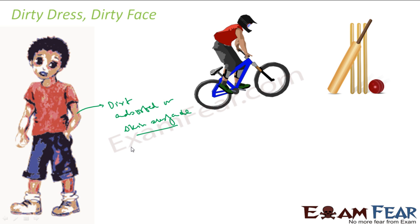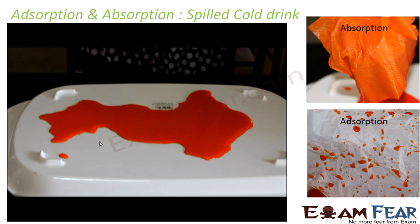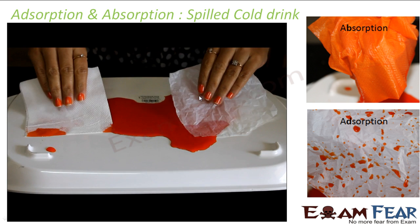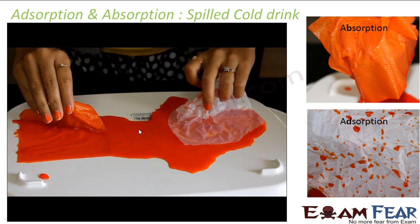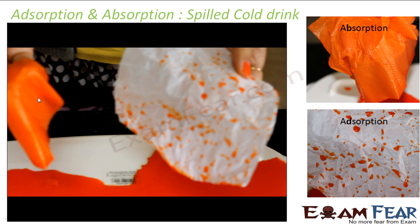Here I have a cold drink spill. I'll see how it behaves on tissue paper versus plastic sheet. On the left-hand side, the whole cold drink is absorbed into the tissue paper. On the right-hand side, the cold drink is adsorbed only on the surface of the plastic sheet. This is a good example of surface chemistry.